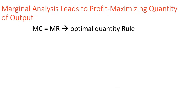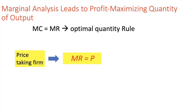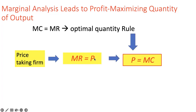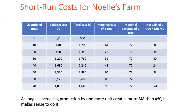So the optimal quantity rule — the profit maximization rule — for a firm in a perfectly competitive market structure is where MC equals MR. For a price-taking firm, marginal revenue always equals price. Combining these two, for a firm under perfect competition, the optimal quantity rule simplifies to where price equals marginal cost. Let's go ahead and find the optimal quantity for Noelle's firm using marginal analysis.